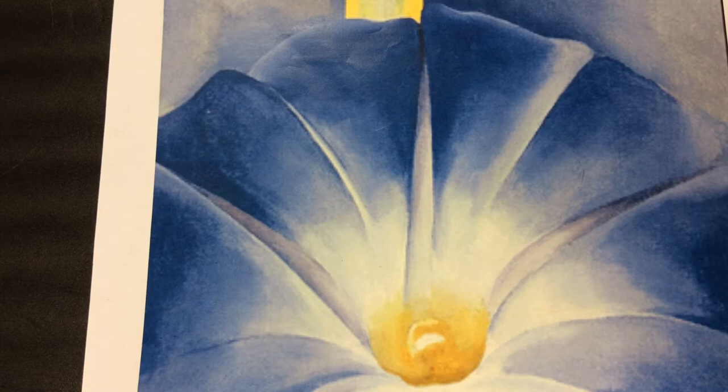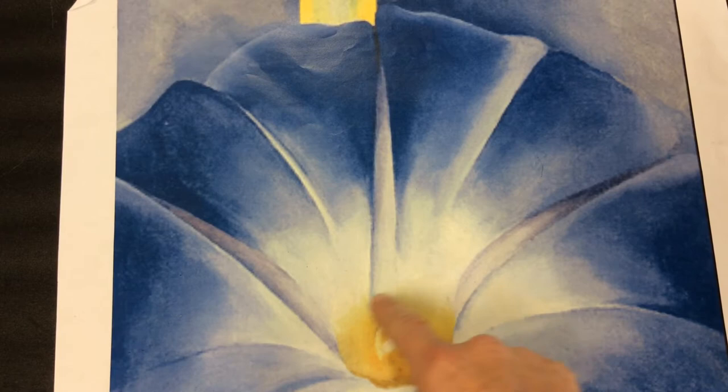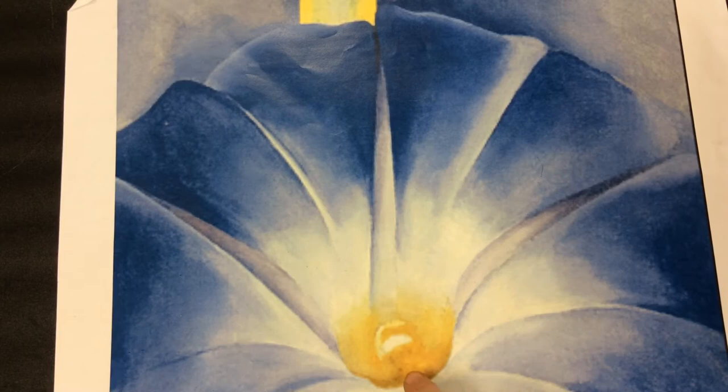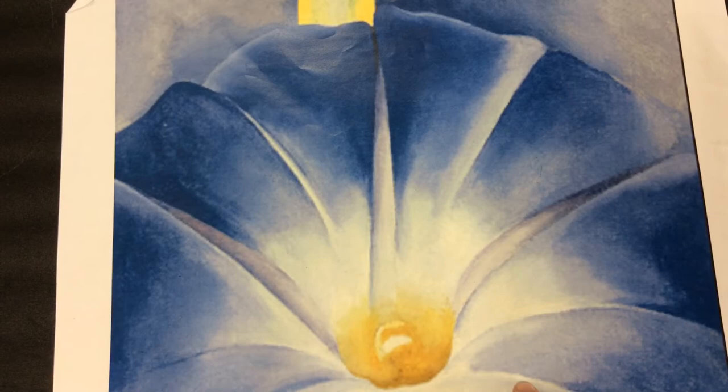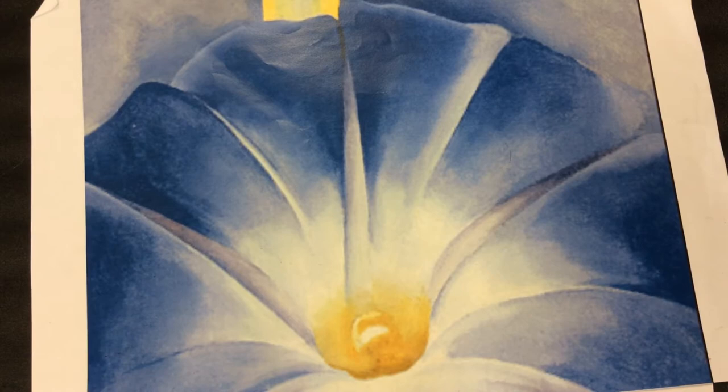First thing my students are going to do is we're going to look at some Georgia O'Keeffe flowers, and we're going to talk about what our rules are when we draw our flower. Our rule is going to be that our flower is going to be off center. We're not going to put the middle of the flower right in the middle of the paper. The other rule is some of our petals are going to go off the page. Those are our two rules: off the page, nice and big, and our flower is facing forward. We don't want the side view of the flower.